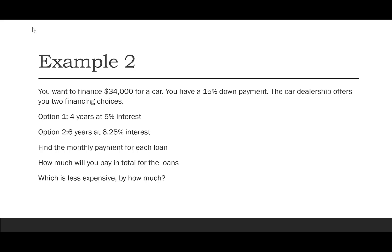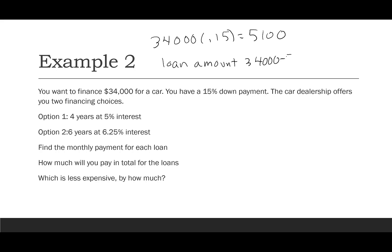First, we calculate the 15% down payment: $34,000 × 0.15 = $5,100 down. So the loan amount is $34,000 minus $5,100, which gives us $28,900. All our calculations will be based on this present value of $28,900.